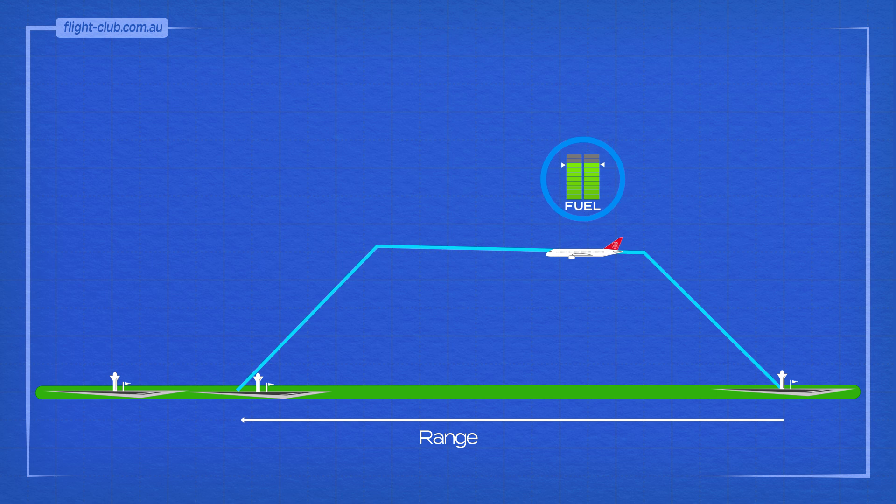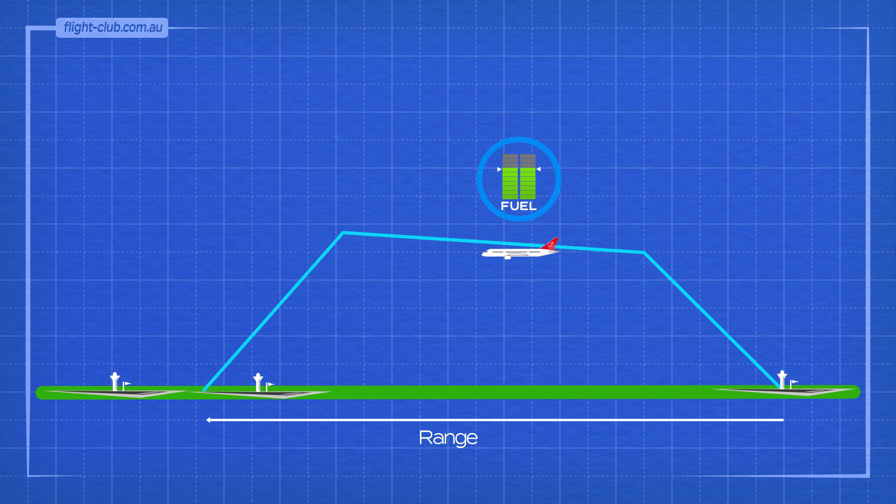As the aeroplane weight decreases with fuel burn the optimum cruise altitude increases. As the optimum cruise altitude increases the specific range increases.